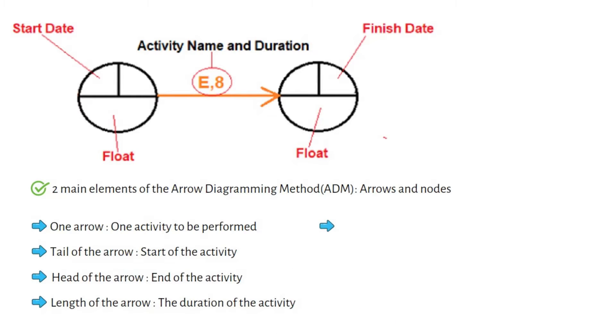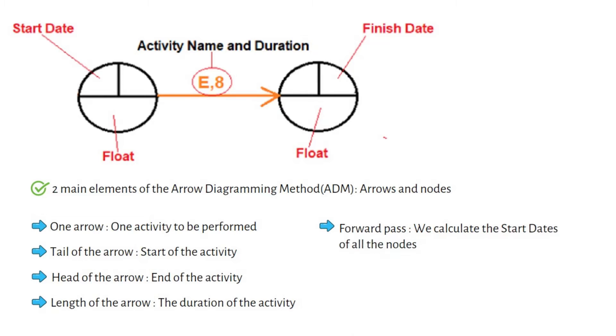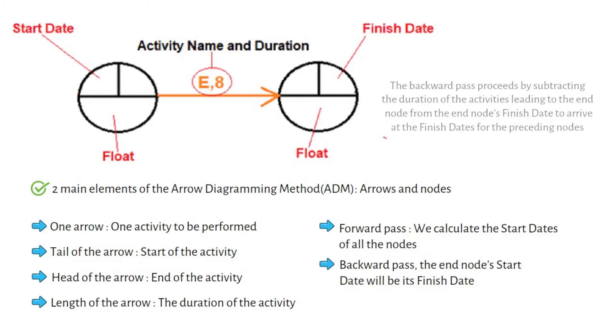In the forward pass we calculate the start dates of all the nodes. In the backward pass, the end node start date will be its finish date. In the backward pass proceeds by subtracting the duration of the activities leading to the end node from the end node's finish date to arrive at the finish dates for the preceding nodes.